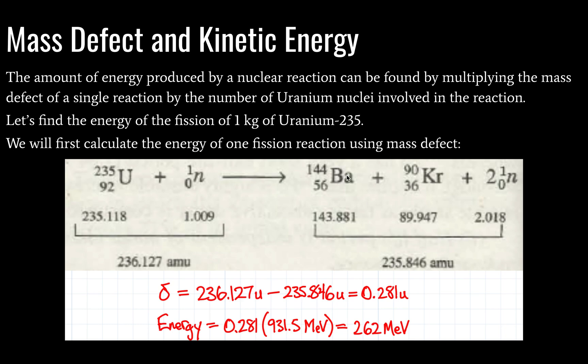And then over here we have our products: barium, krypton. In this case we have two neutrons instead of three. It's fine.